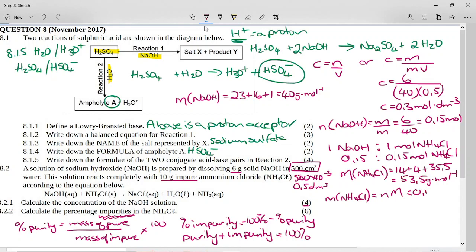So the mass of ammonium chloride is going to be the number of moles times the molar mass. So I had 0.15 moles from my mole ratio times 53 and a half. And if you put that in your calculator, you get 8.025 grams.